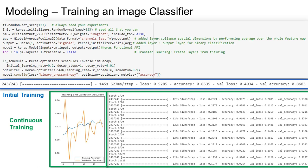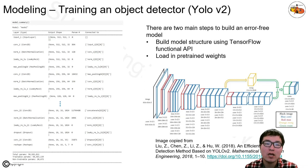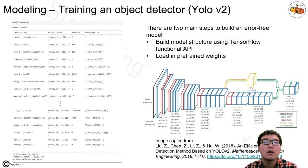Now we will go over training the object detector using YOLO v2. The YOLO v2 network is formed by a bunch of convolutional layers, max pooling layers, and a so-called passthrough layer. In our case, the image input size is 512 by 512 by 3, and the output of the YOLO network is 16 by 16 by 5 by 7. I will explain these dimensions in detail later.